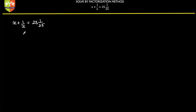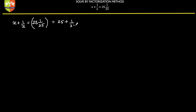If you take LCM from the LHS, you get x in the denominator and x squared plus 1 in the numerator. So this confirms it is a quadratic equation. Now, one key observation about this equation: we can write the RHS as 25 plus 1 upon 25, which is in the form of x plus 1 by x. If you look at it, x's value could be 25.